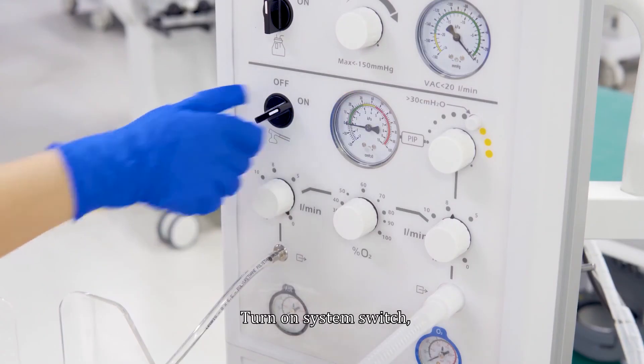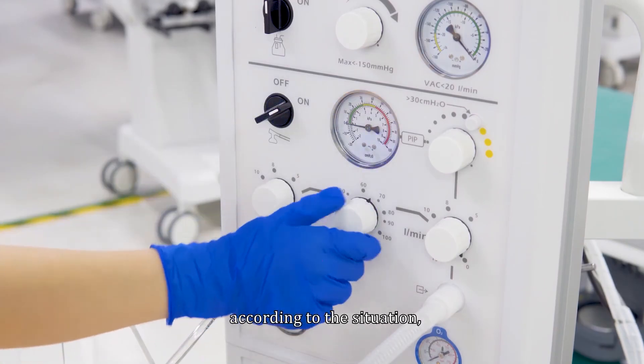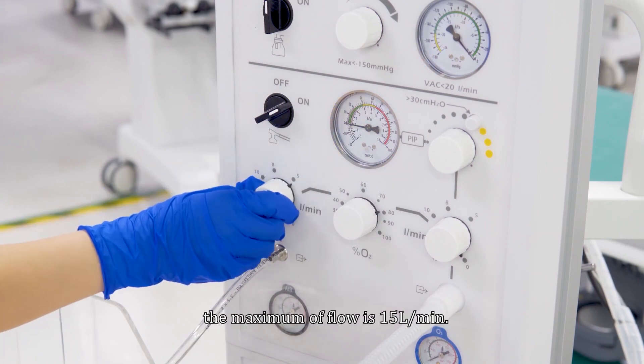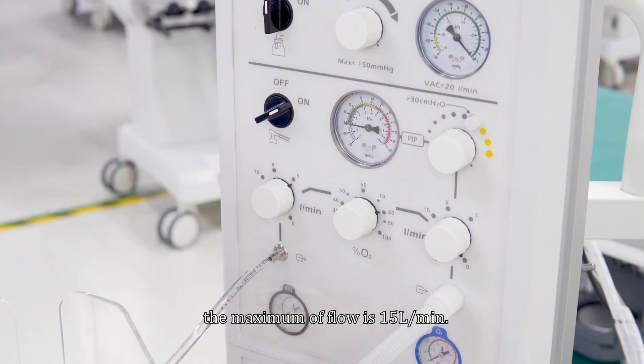Turn on system switch. According to the situation, adjust the oxygen concentration, the range is from 0 to 100 percent. Set the desired airflow, the maximum of flow is 15 liters per minute.